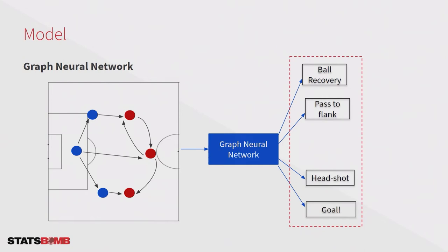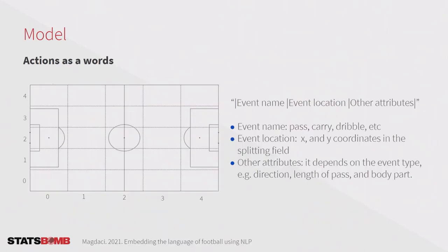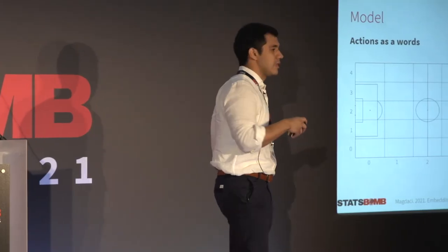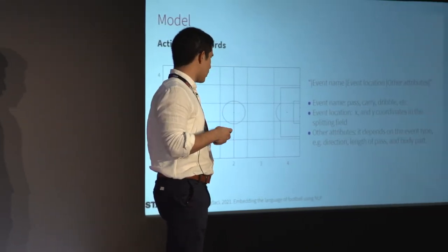Now we need to define how we represent the output of our model. I'm going to translate every action into a word, following an idea McDassy presents in 'Embedding the Language of Football using NLP.' For each action, I have three components: first, the name of the event (pass, carry, dribble, etc.); second, the location of the pass based on a field split; and finally, some other attributes depending on the event — for example, if it's a pass, I include the direction, the length, and the body part used.